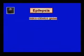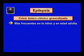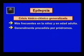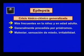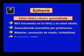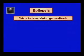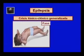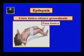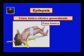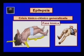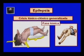Las crisis tónico-clónicas generalizadas son más frecuentes en la niñez y en la edad adulta. Generalmente son precedidas por pródromos: desde días antes el paciente puede referir malestar, sensación de miedo e irritabilidad. El comienzo es súbito, sin previo aviso. El paciente pierde el conocimiento y cae; los globos oculares se desvían y emite un grito. En la fase tónica se contraen todos los grupos musculares: la cabeza en extensión, los miembros superiores flexionados en aducción y el tronco y los miembros inferiores en hiperextensión. La contracción tónica del diafragma causa apnea y cianosis. Esta fase dura entre 20 y 30 segundos.